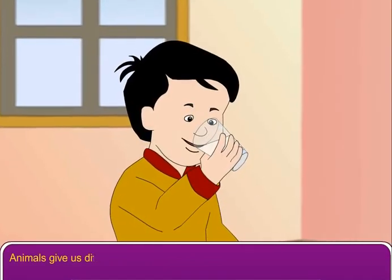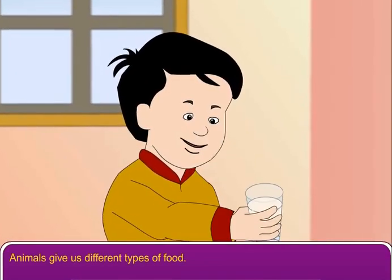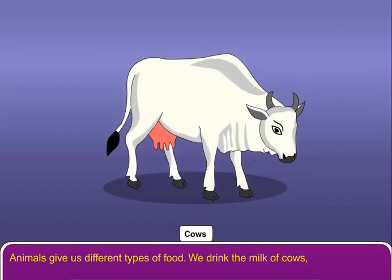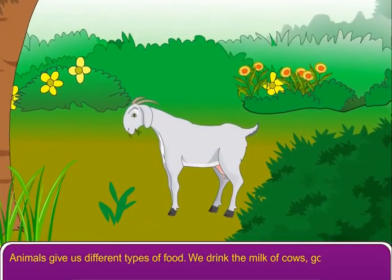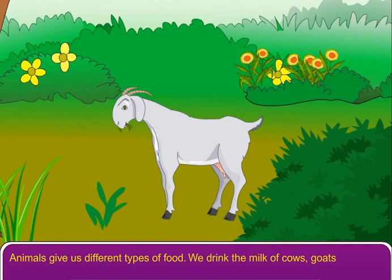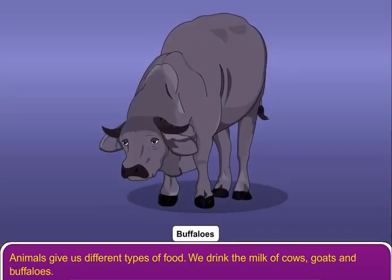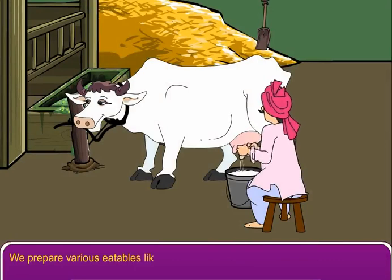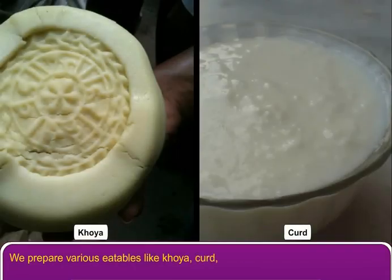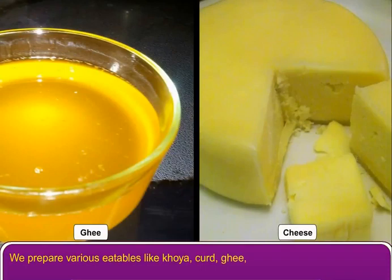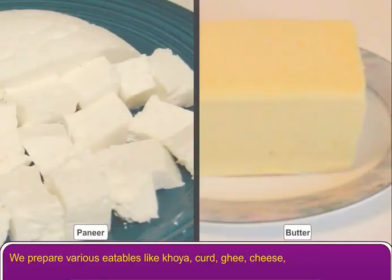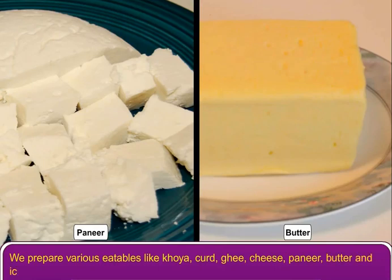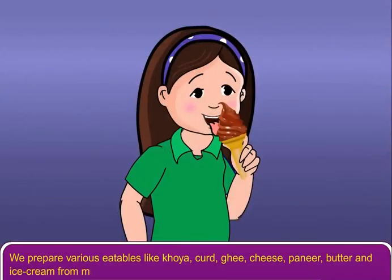Animals give us different types of food. We drink the milk of cows, goats and buffaloes. We prepare various eatables like khoya, curd, ghee, cheese, paneer, butter and ice cream from milk.